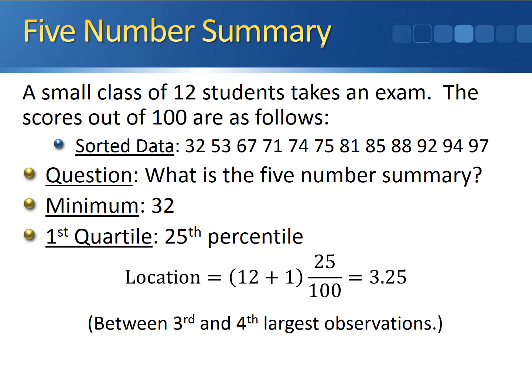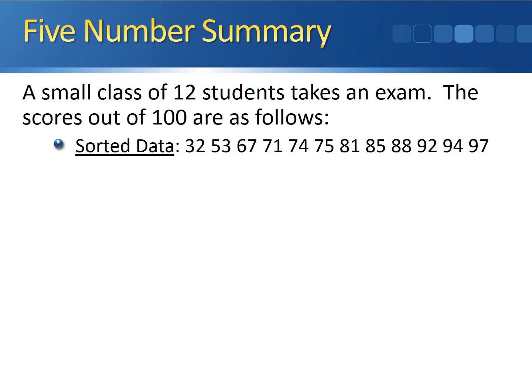This tells us that the 25th percentile is between the 3rd and 4th largest observations. The 3rd largest observation is 67, and the 4th largest is 71. Since the decimal part is .25, it's closer to the 3rd largest observation, so we assign a weight of .75 to the 3rd largest and a weight of .25 to the 4th largest. The value of the 25th percentile is therefore 67 times .75 plus 71 times .25, which gives us 68.